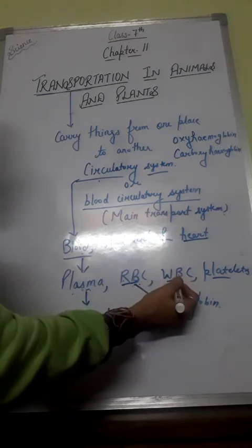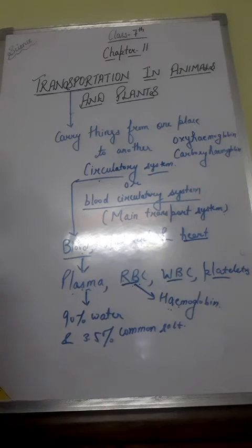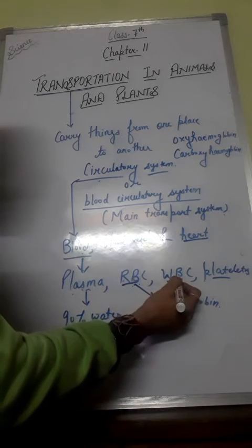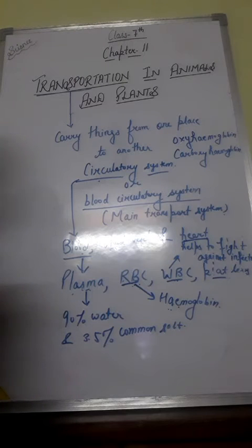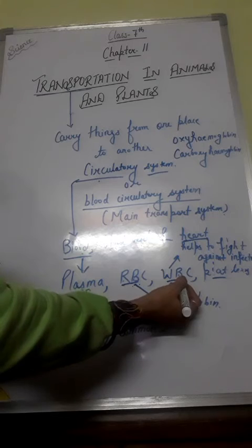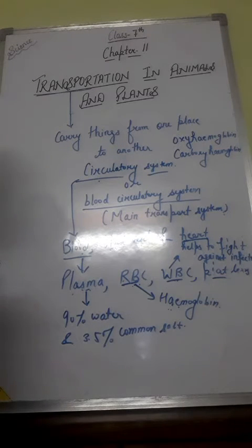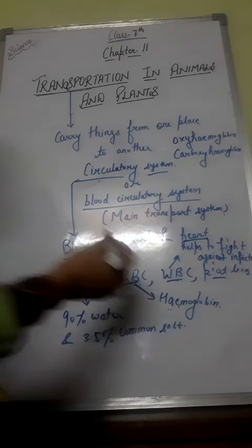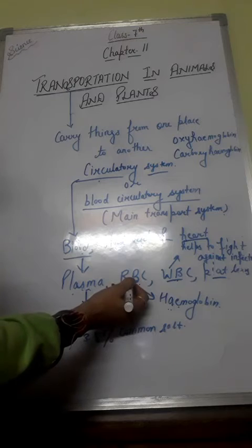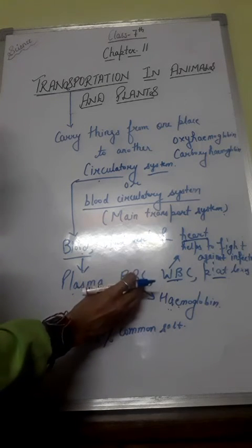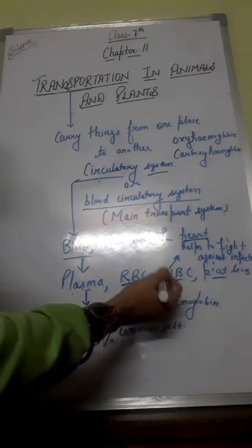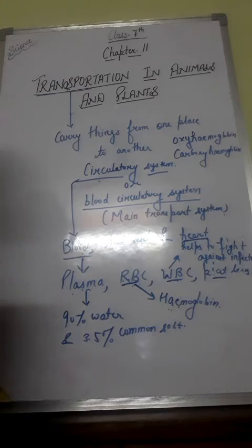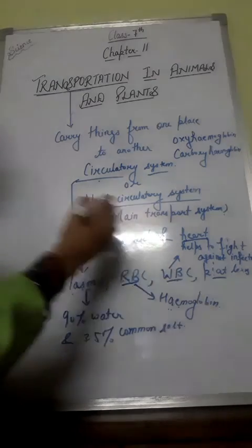The third component of blood is WBCs, that is white blood cells. WBCs help us to fight against infection and protect us from various diseases. WBCs eat up germs like bacteria that cause diseases, and they also make antibodies that fight against any type of infection. The number of WBCs is generally quite less as compared to red blood cells. WBCs can change their shape and move on their own, and they can squeeze out of the blood vessels to reach any part of the body.